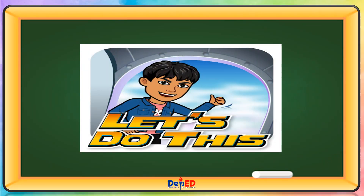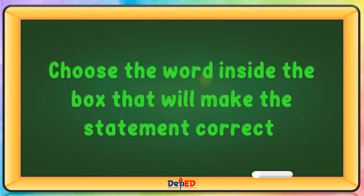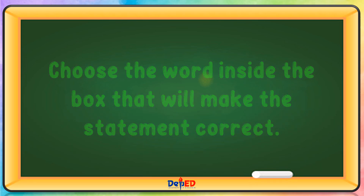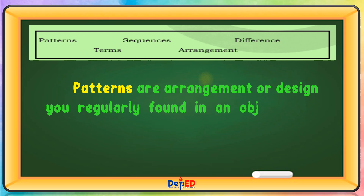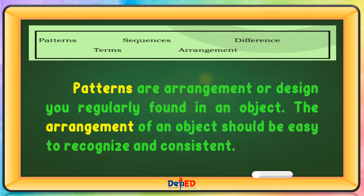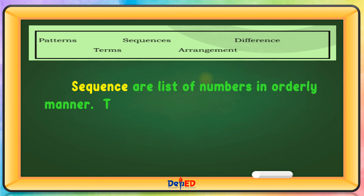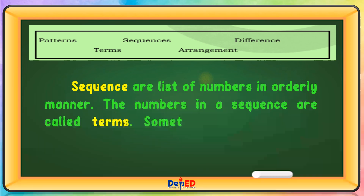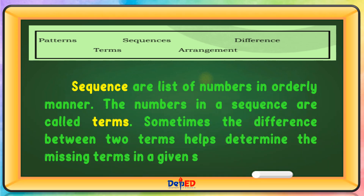Let's do this. Choose the word inside the box that will make the statement correct. Patterns are arrangements of design you regularly found in an object. The arrangement of an object should be easy to recognize and consistent. Sequences are lists of numbers in an orderly manner. The numbers in a sequence are called terms. Sometimes, the difference between two terms helps determine the missing term in a given sequence.